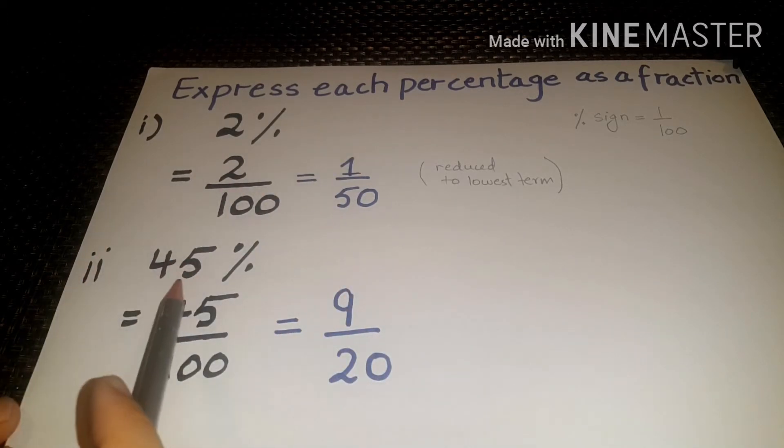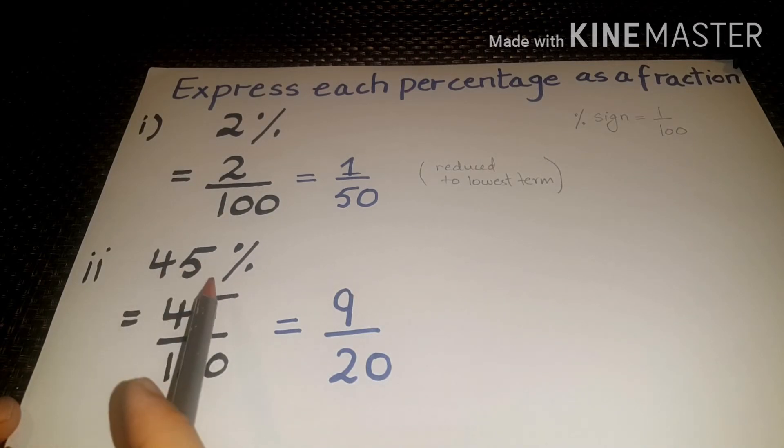Question number two, 45 percentage. 45 percentage means 45 divided by hundred. Again 9 by 20 we get in its reduced to the lowest term form.